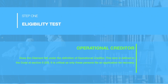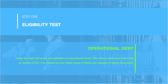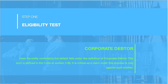Secondly, whether the claimant falls under the term 'operational creditor' as defined under section 5 subsection 20 of the code. Thirdly, whether the debt — that is, the money owed — falls under the definition of 'operational debt' defined under section 5 subsection 21 of the code. And finally, whether the debtor falls within the definition of 'corporate debtor' defined under section 3 subsection 8 of the code.